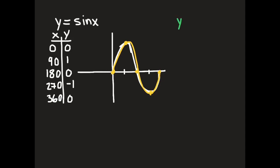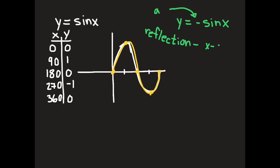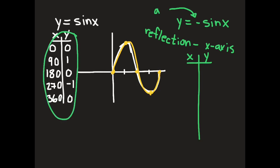How does that compare to y equals negative sine x? The fact that there's a negative out in front means your a is negative. We know that if a is negative, this is a reflection — just like with a parabola or any other function — it's a reflection in the x-axis. So a table of values for y equals negative sine x would look much like y equals sine x, except all y values would become negative.